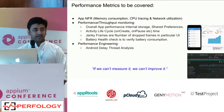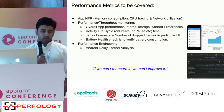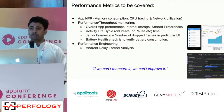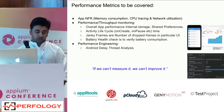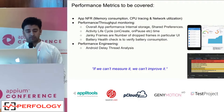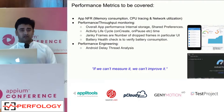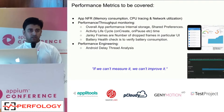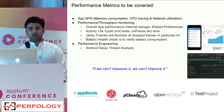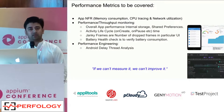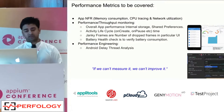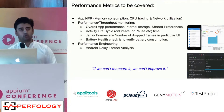The metrics Google provides include activity lifecycle time, overall app performance, internal storage usage, shared preferences usage, janky frames, and battery health check. These, along with what we were already tracking, form the key set of matrices we work upon during our performance monitoring. We also have a performance engineering effort where we improve upon things.